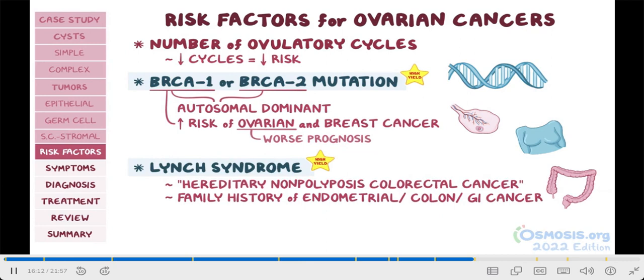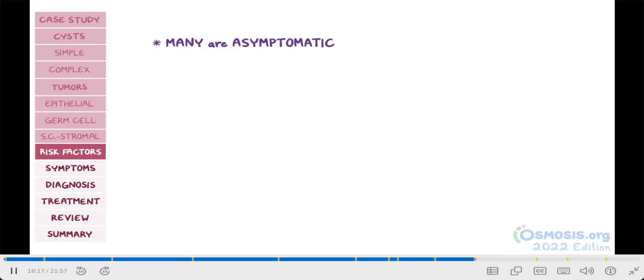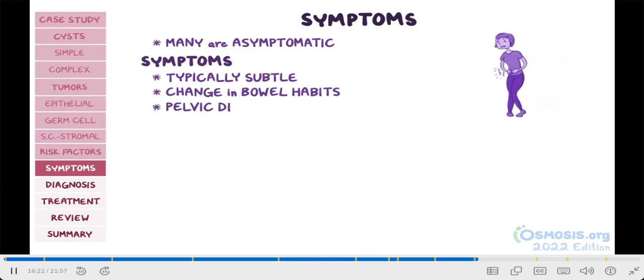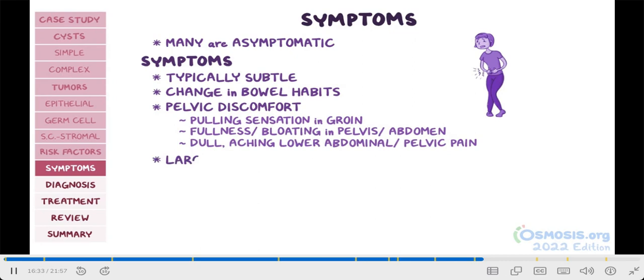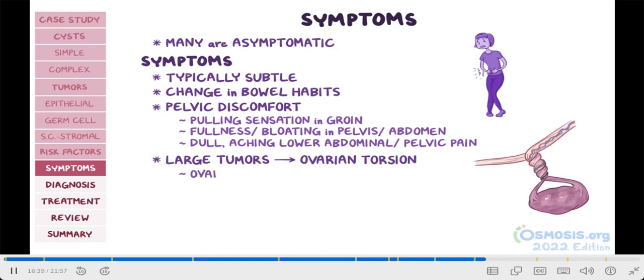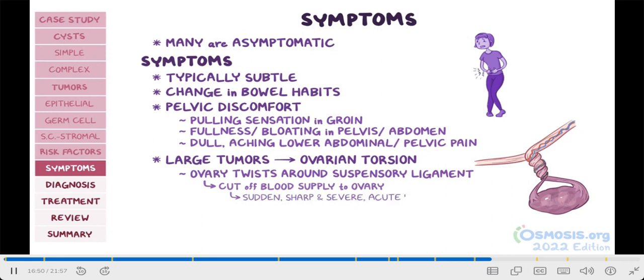Now, many ovarian cysts and tumors are asymptomatic. When there are symptoms, they are typically subtle and may include a change in bowel habits and pelvic discomfort that ranges from a pulling sensation in the groin, fullness, or bloating in the pelvis or abdomen, and dull, aching lower abdominal or pelvic pain, especially in the case of large tumors like cystic teratomas. Large tumors can even cause ovarian torsion, where the ovary twists around the suspensory ligament. Since this ligament contains the ovarian blood vessels, torsion can cut off the blood supply to the ovary, resulting in sudden, sharp, and severe acute pelvic pain and ovarian ischemia.